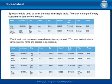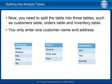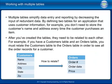A spreadsheet is used to enter data in a single table, which is simple if every customer orders only one copy. But what if each customer orders several copies in a day or week? You would need to duplicate the same customer name and address in each record. To avoid this, you split the table into three tables: a customers table, an orders table, and an inventory table. Multiple tables simplify data entry and reporting by decreasing redundant data.